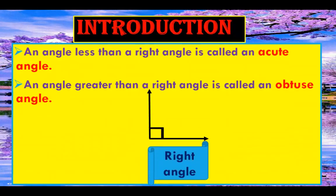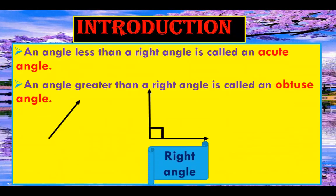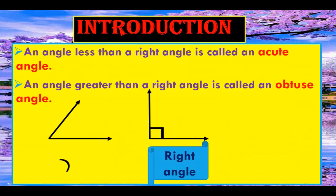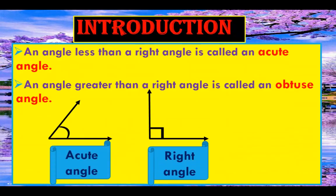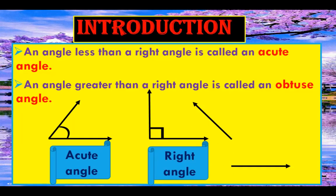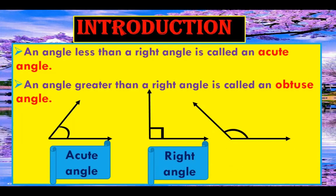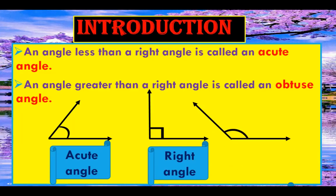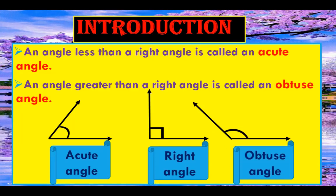This is a right angle measuring 90 degrees. This is an acute angle that is less than a right angle. And this is an obtuse angle that is greater than a right angle.